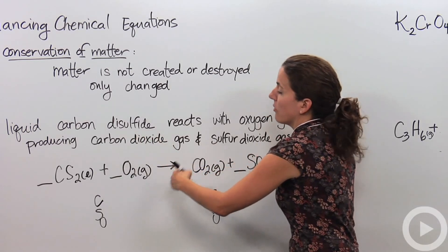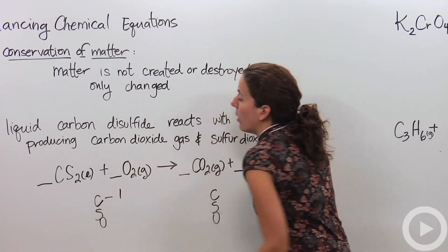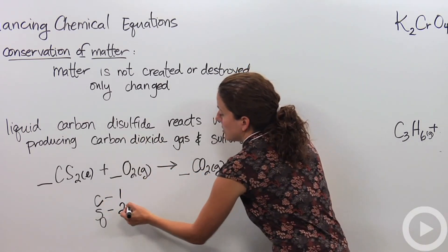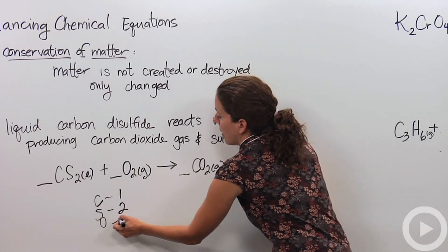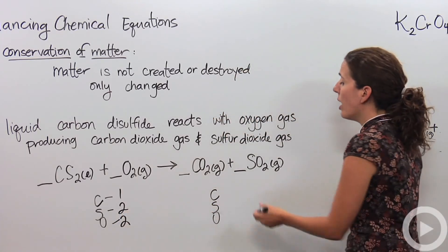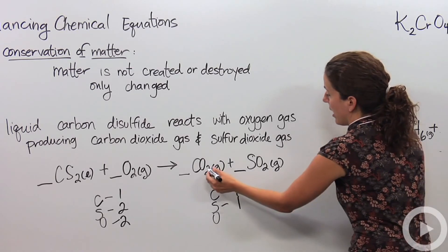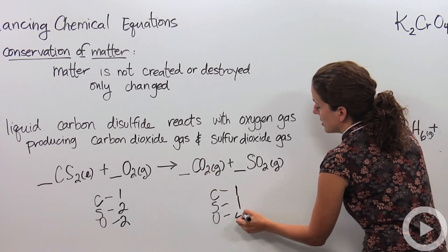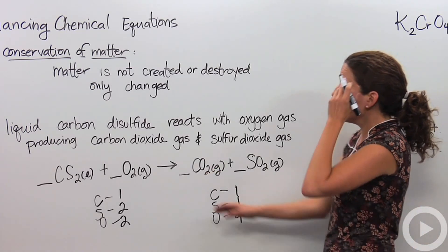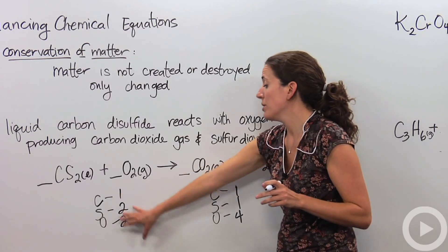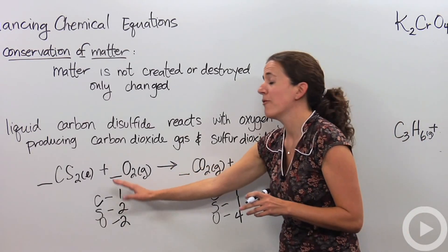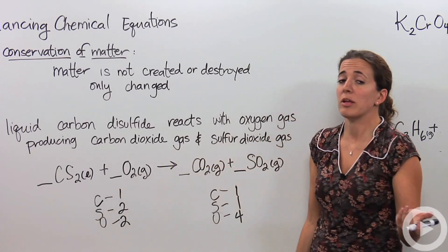So on the reactant side, we have one carbon, we have two sulfur atoms, and we have two oxygen atoms. On the product side, we have one carbon, one sulfur, and two plus two is four oxygens. So right now, before we even balance it, we notice that we have an uneven number of elements on either side to make sure they're even and balanced.